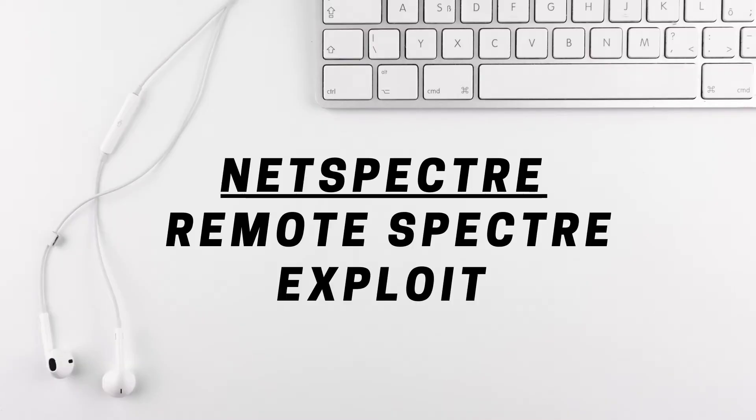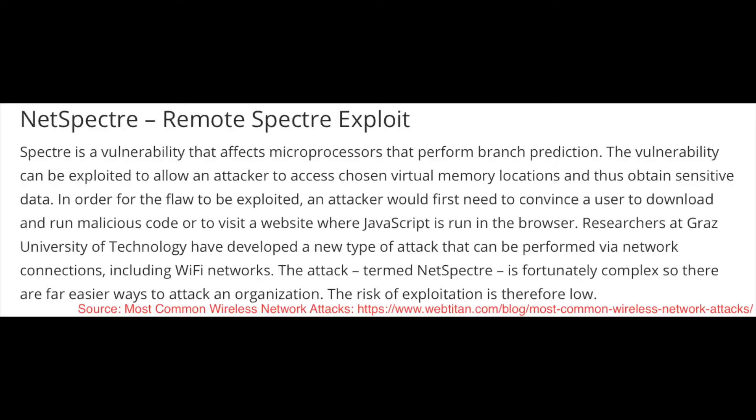The fifth vulnerability is the Spectre remote exploit. This vulnerability affects microprocessors that perform branch predictions, so it's less about home Wi-Fi specifically. It's a new vulnerability and extremely unlikely to happen, but I've included it in this top five because it's worth being aware of.